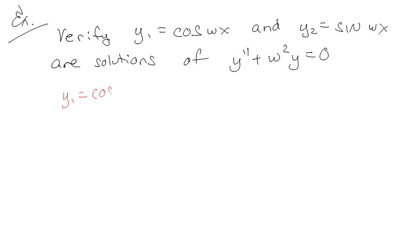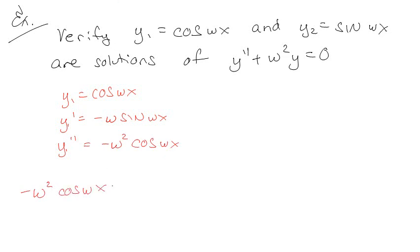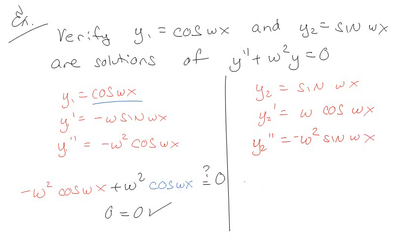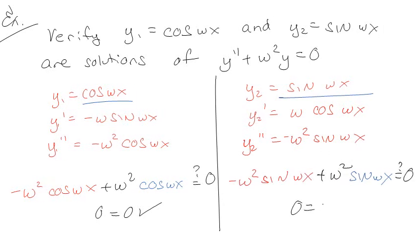So y₁ = cos(ωx), y₁' = −ω·sin(ωx), y₁'' = −ω²·cos(ωx). Plugging into y'' + ω²y: −ω²·cos(ωx) + ω²·cos(ωx) = 0. Yes, zero clearly equals zero — verified! Then for y₂ = sin(ωx), taking its derivatives and plugging in gives the exact same result. Verified. These are great problems to have on a test.